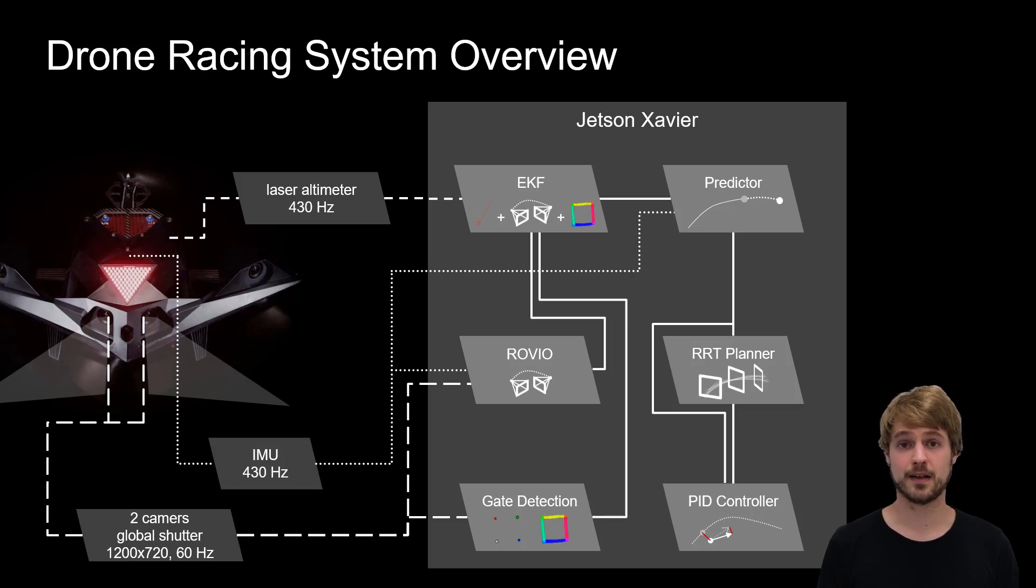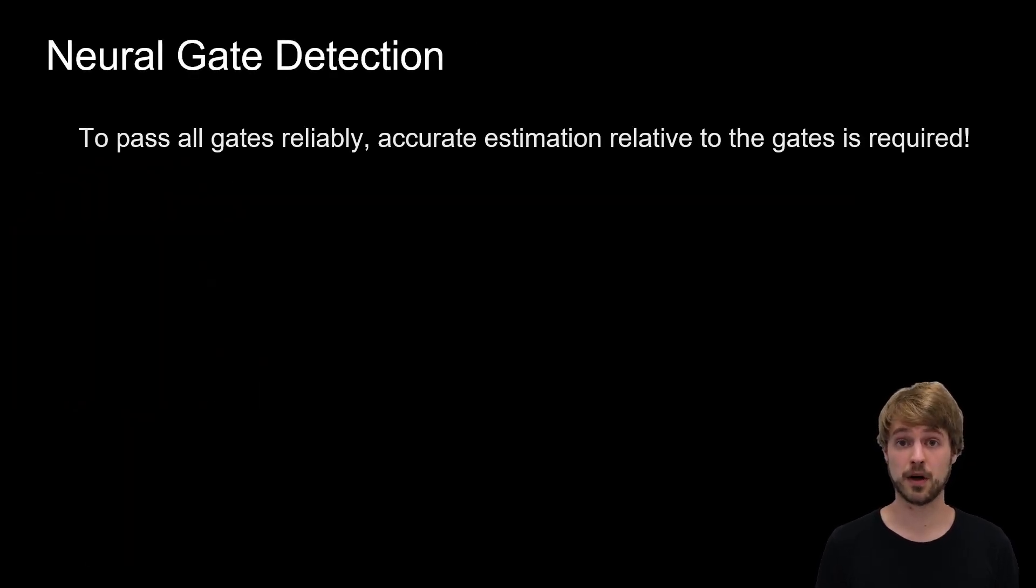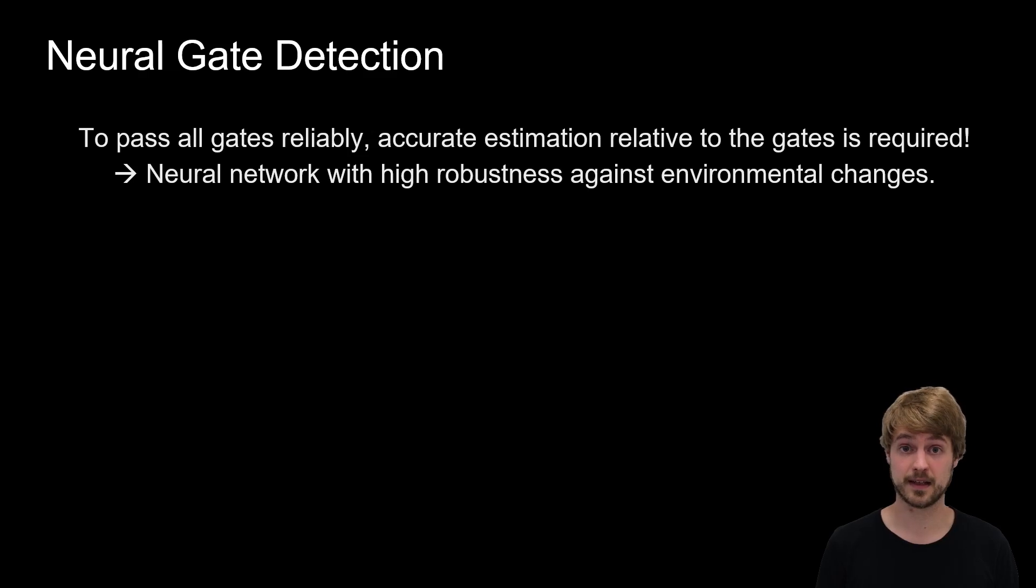Now, let's look at the individual components. First and foremost, to pass all gates reliably, we need an accurate state estimate relative to the gates. We do this by detecting gates using a neural network with high robustness against environmental changes.